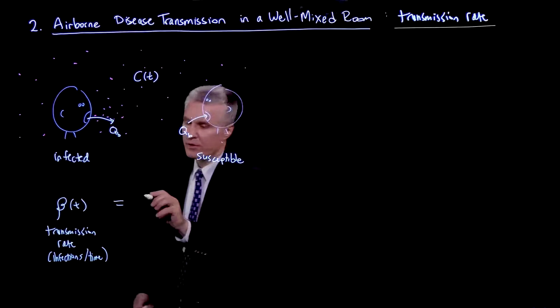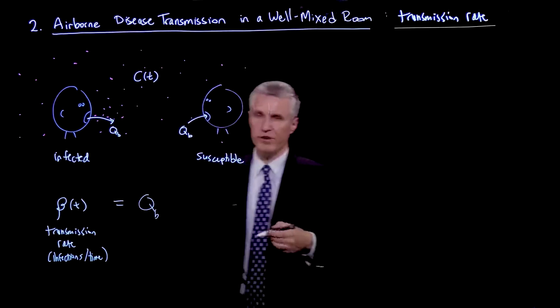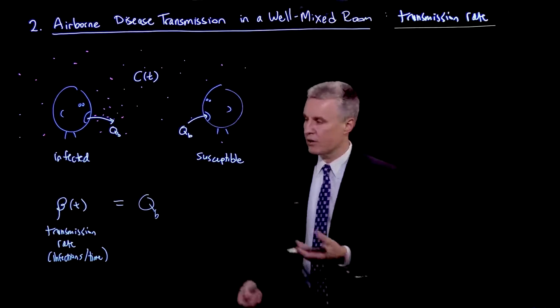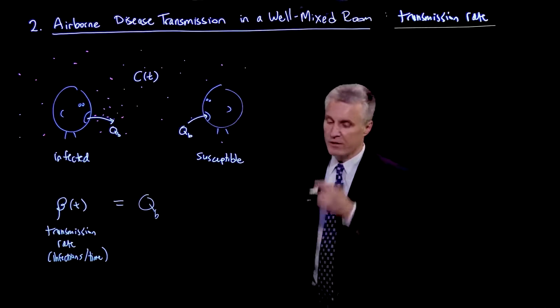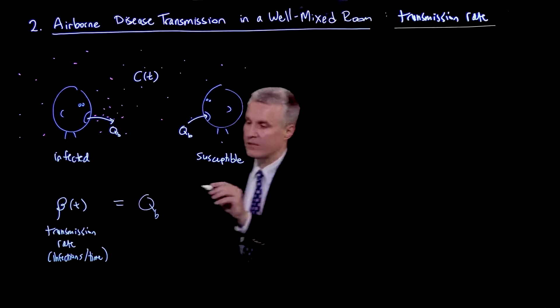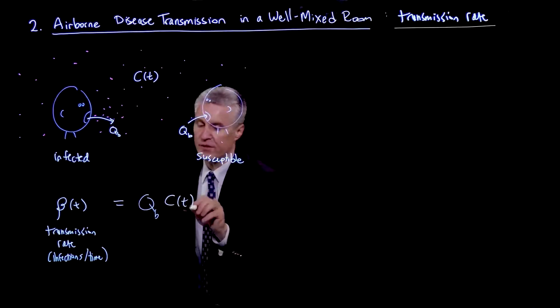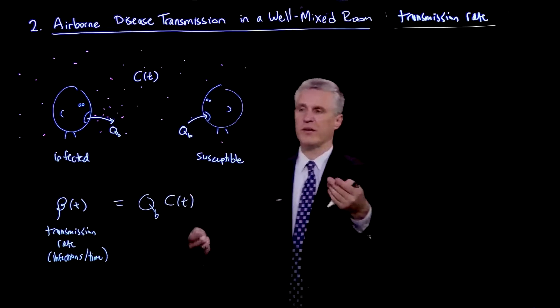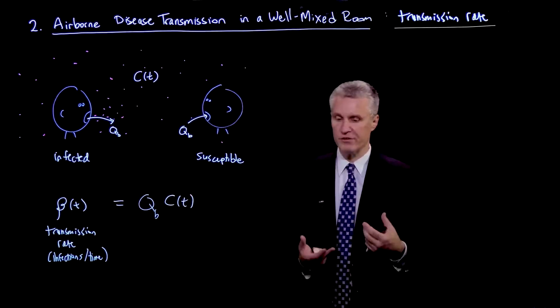And so Qb is the volume per time around 0.5 meters cubed per hour with which they're sampling the air. And the air comes in, and C of t is the concentration of virions per volume. So this combination now tells me how many virions per time they're actually taking in.